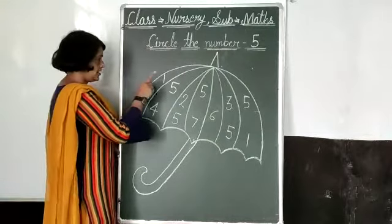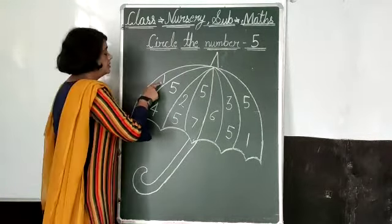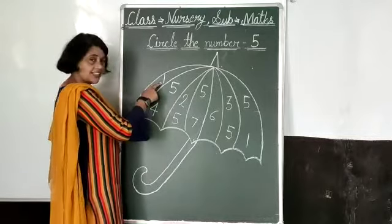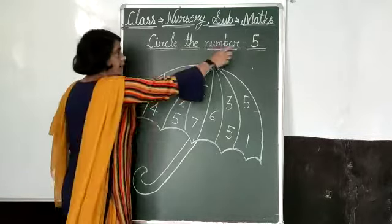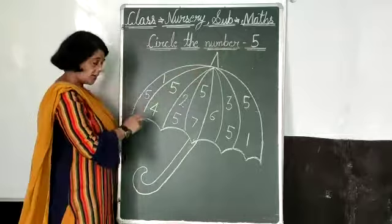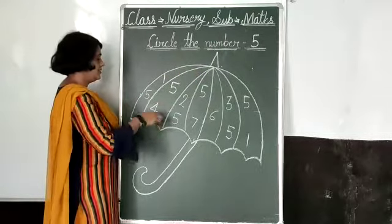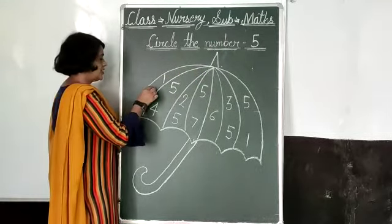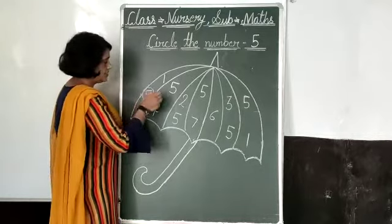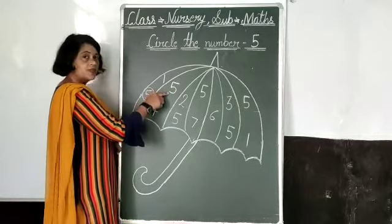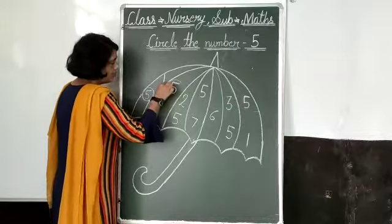This number 1 — not circle this number. This number 5 — yes, circle this number. This number 5 — yes, circle this number.